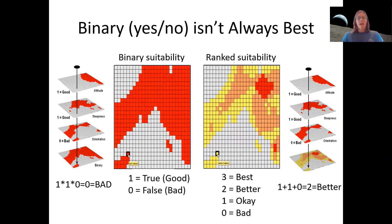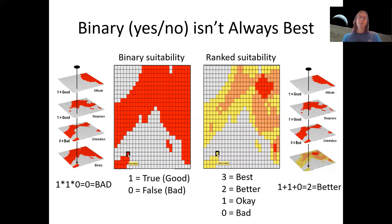Binary maps typically get made with boolean AND statements or by multiplying different layers together, where only the areas where everything is one end up with the answer being true — a suitable location. On the other hand, rather than a boolean AND statement, you can use a boolean OR statement or simple addition. You have a bunch of 1-0 layers, and the habitat gets better as you add these things together, but none of them is an absolute no-go if you end up with a zero. In that case, you end up with four total categories: 0, 1, 2, and 3, rather than just 0 and 1.